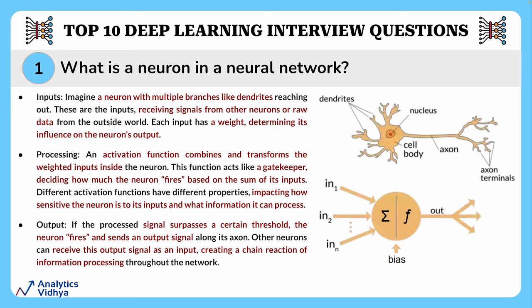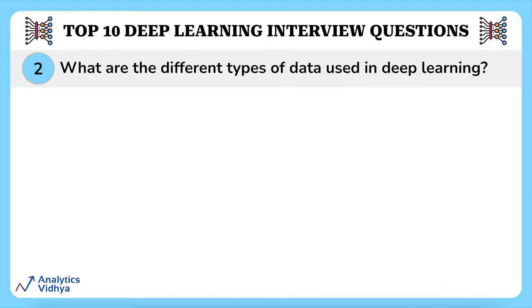Finally, output: if the processed signal surpasses a certain threshold, the neuron fires and sends an output signal along its axon. Other neurons can receive this output signal as an input, creating a chain reaction of information processing through the network.